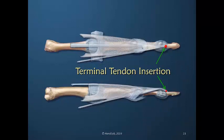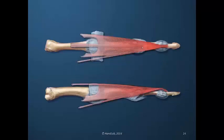The dorsal apparatus coalesces and terminates in the terminal tendon insertion. All of these fibers come together to create one insertion into the dorsal aspect of the distal phalanx. We might assume there is a terrific amount of power gathering to insert at the terminal tendon insertion, but there are multiple insertions of the dorsal apparatus limiting the excursion of the system both proximally and distally, and also limiting the amount of power driven to the terminal tendon insertion.